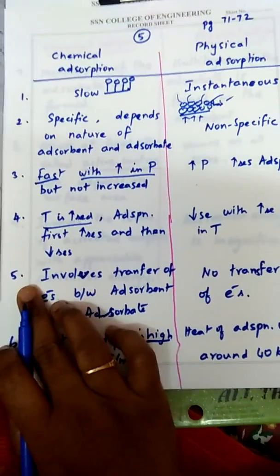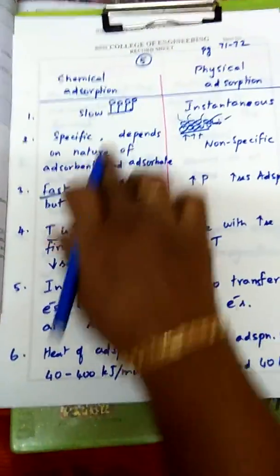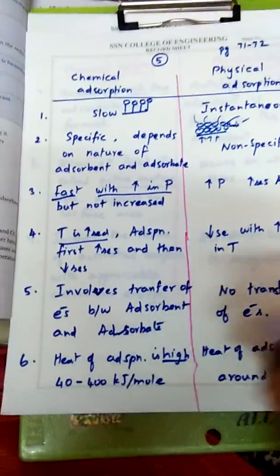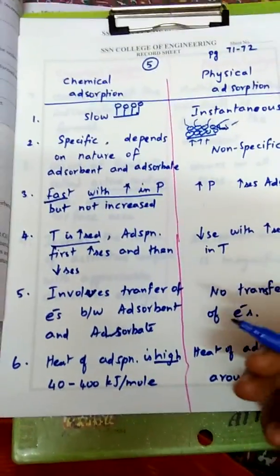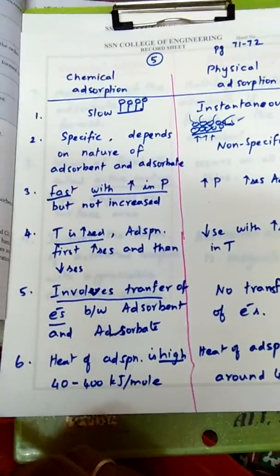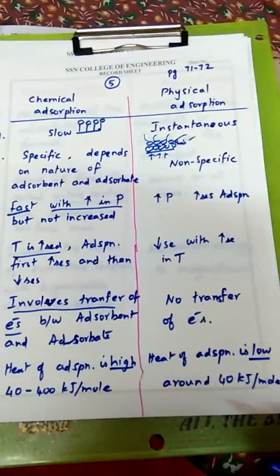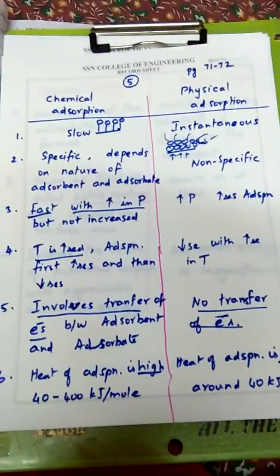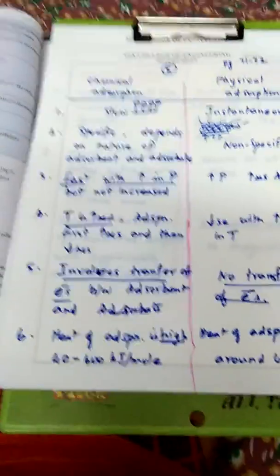The fifth point: in chemical adsorption, a chemical bond is formed between adsorbate and adsorbent, which involves the transfer of electrons between adsorbate and adsorbent. In physical adsorption, there is no transfer of electrons because only a force of attraction exists — no electron transfer occurs.